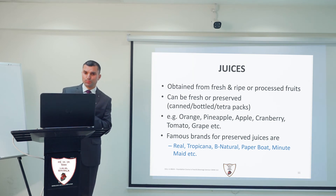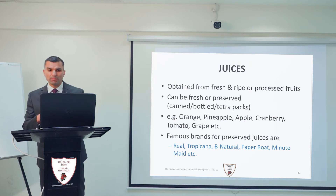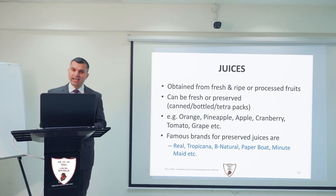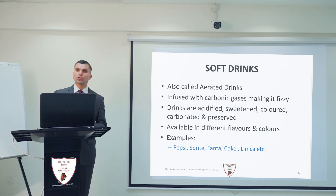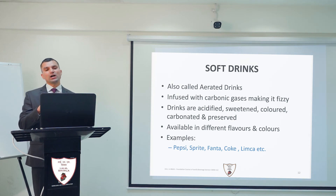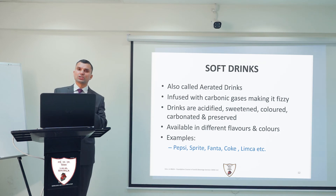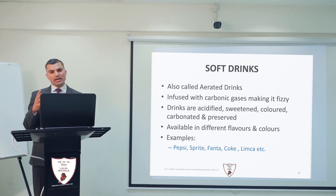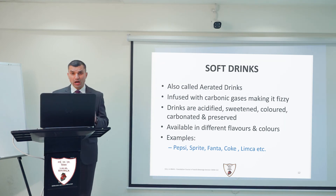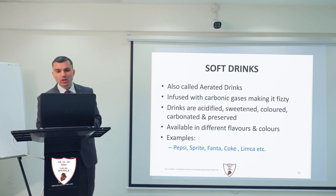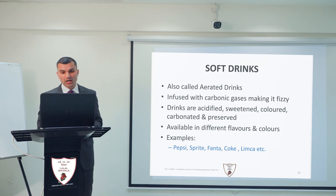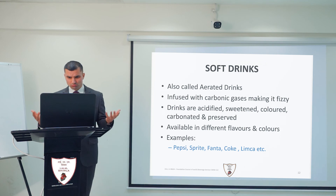Some of the famous brands for preserved juices — canned, bottled or tetra pack — are Real, Tropicana, Be Natural, Paper Boat, Minute Maid, etc. Last, we have soft drinks, which are also called aerated drinks. These are basically carbonated drinks, and this carbon dioxide makes them fizzy. These are acidified, sweetened, coloured, carbonated and preserved in order to remain usable for a longer time. They are available in different flavours and colours. Examples in the market include Pepsi, Sprite, Fanta, Coke, Miranda, Limca, to name a few.